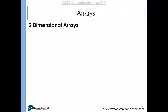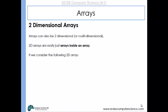Arrays can also be two-dimensional. In fact, they can be multi-dimensional—you can have arrays within arrays within arrays. But we'll look at two-dimensional arrays at GCSE. A 2D array is really just an array inside an array. Here, we've got a two-dimensional array that contains two arrays within it.